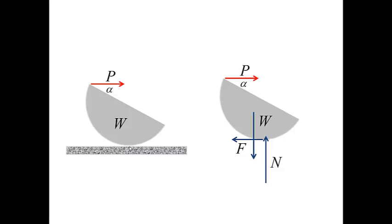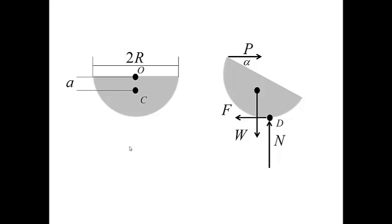To quantify the equilibrium equations, let me identify the center of the semicircle by O, the center of mass where the weight is applied by C, the radius of the semicircle by R, and the distance between O and C by A.